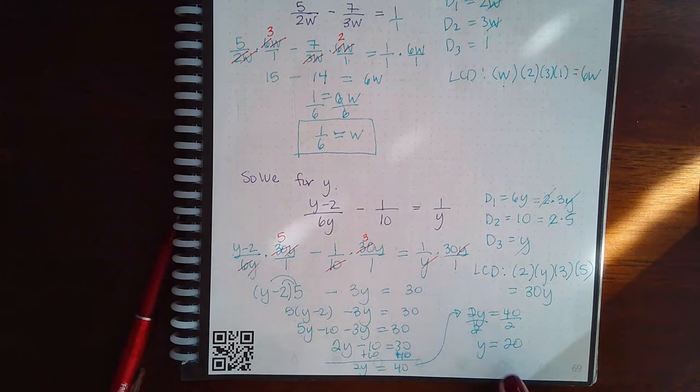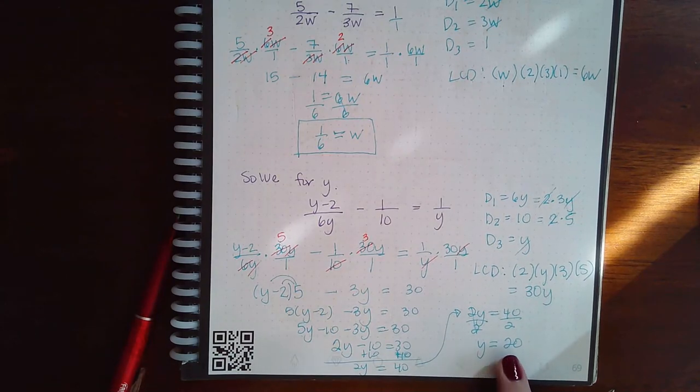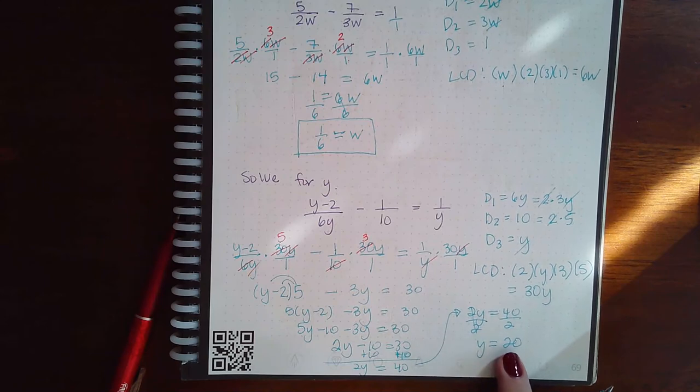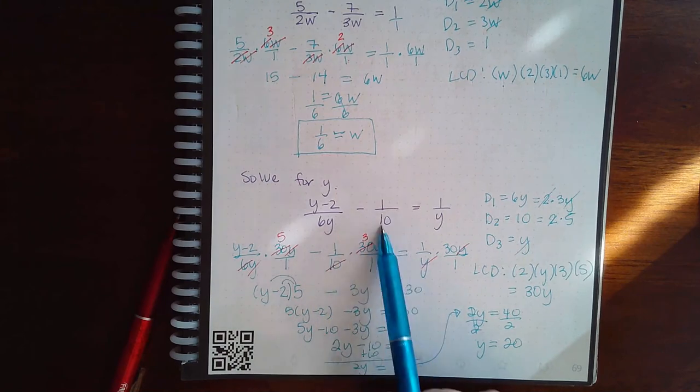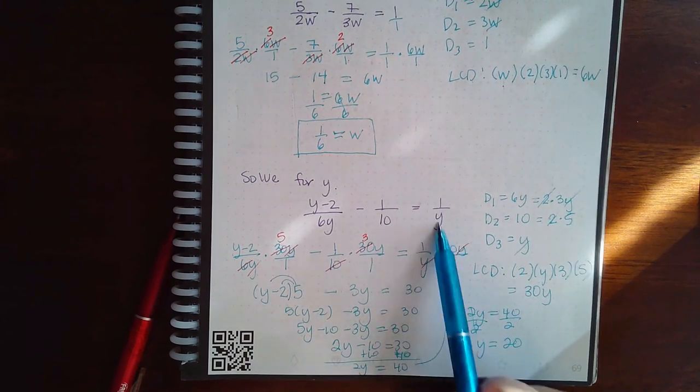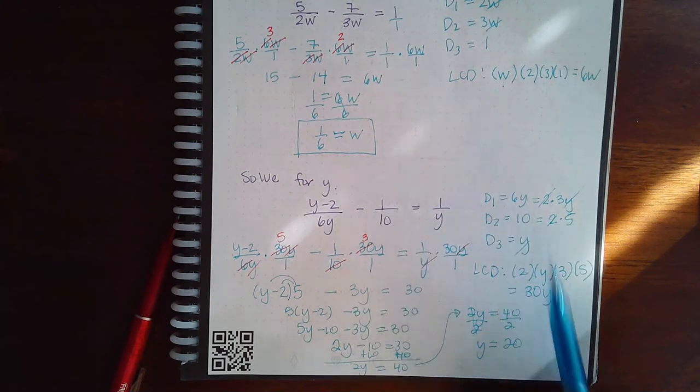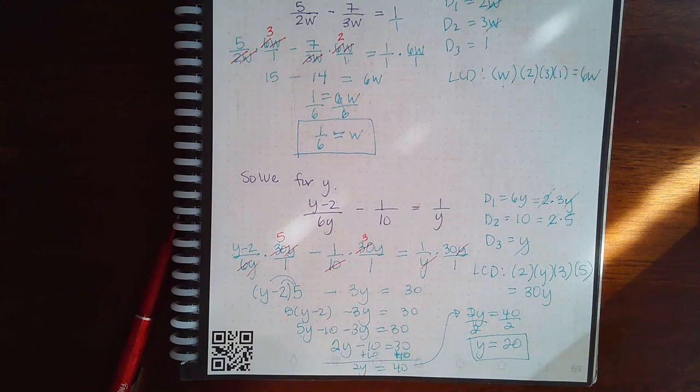And so again, this is a potential solution. Let's make sure it doesn't make any of the denominators 0. 6 times 20 is not 0. 10 itself is not 0. And then if I plug in 20, 20 is not 0. So this potential solution is an actual solution.